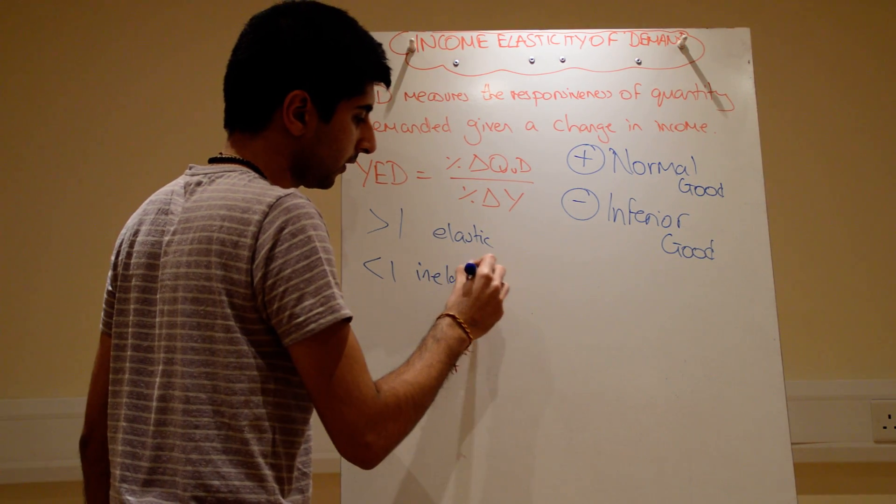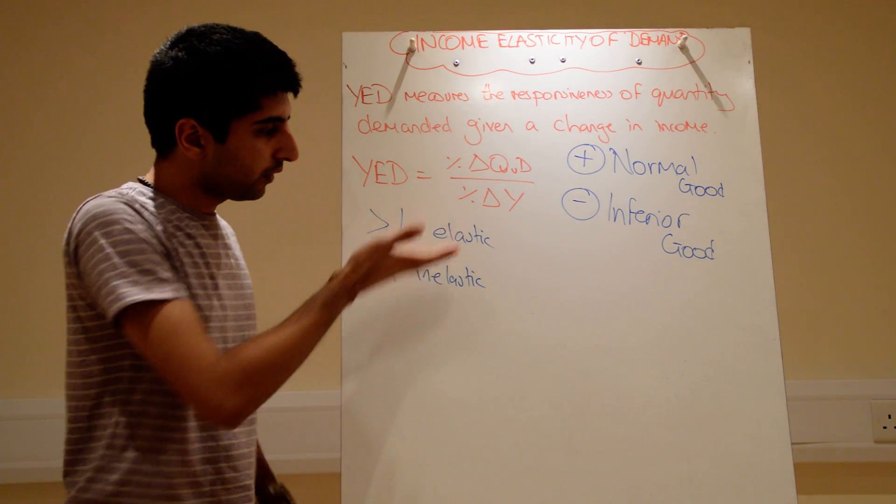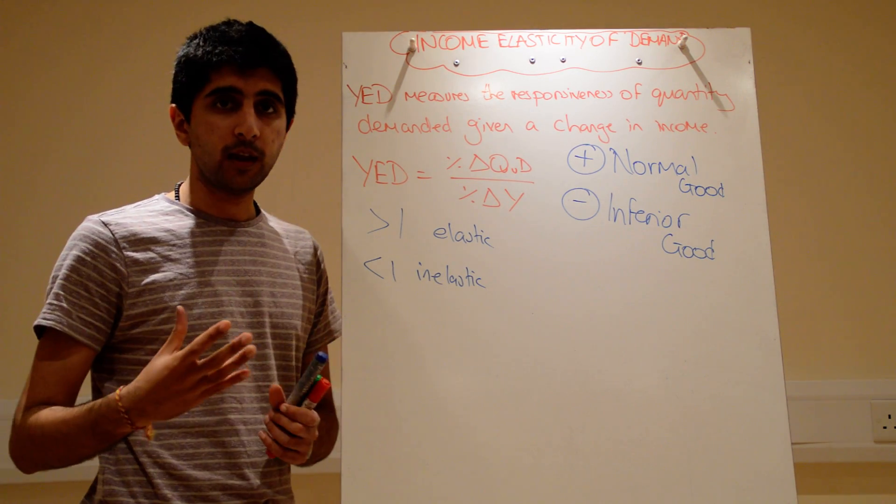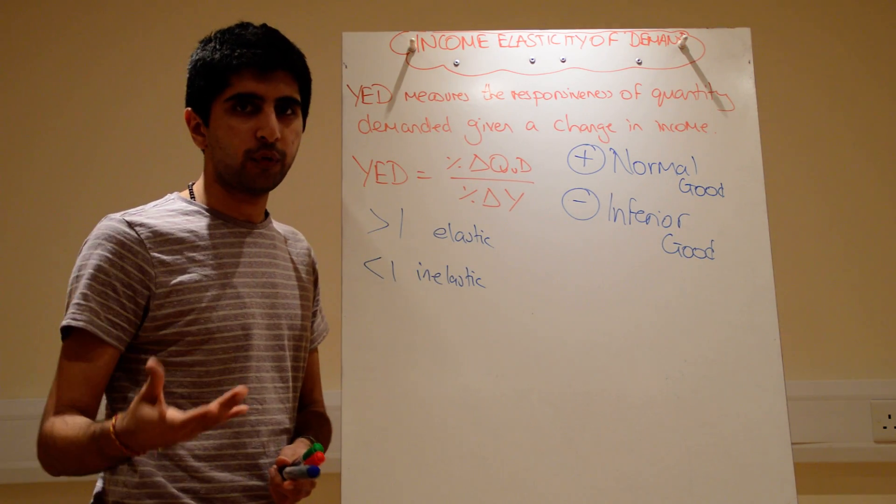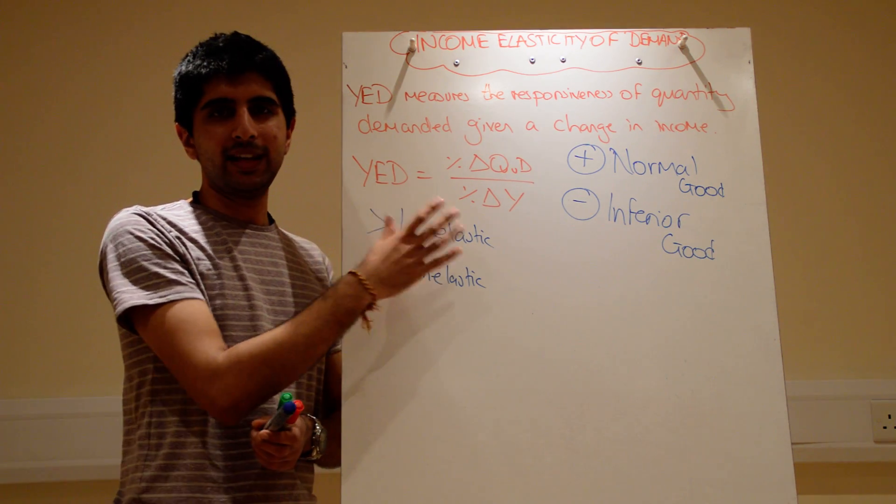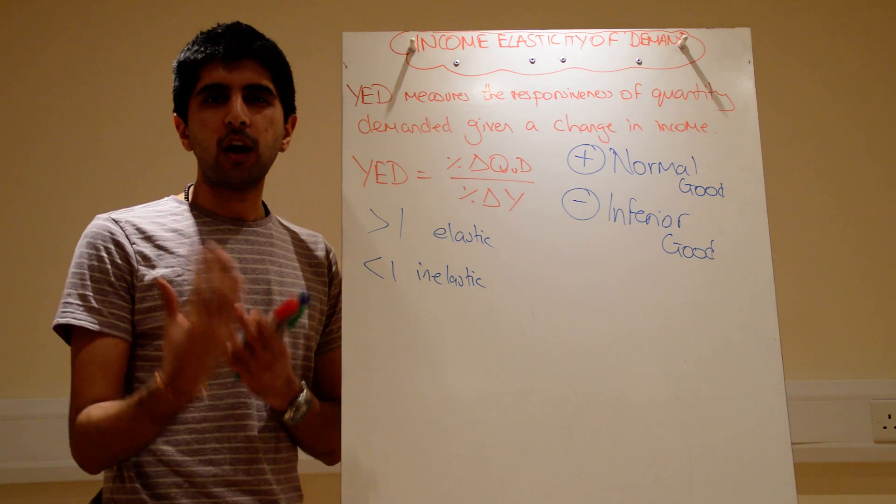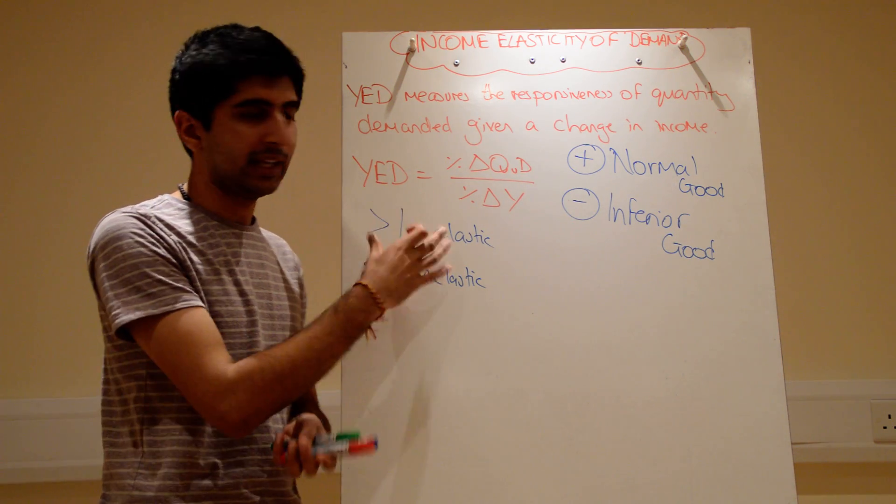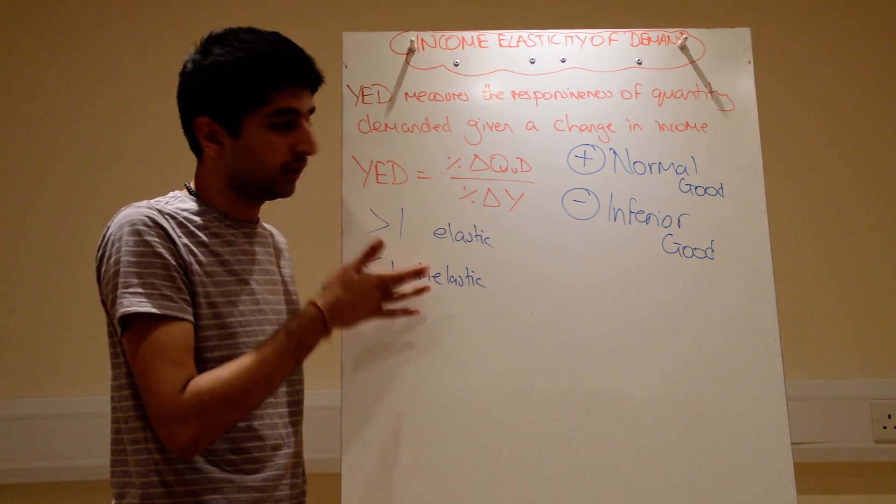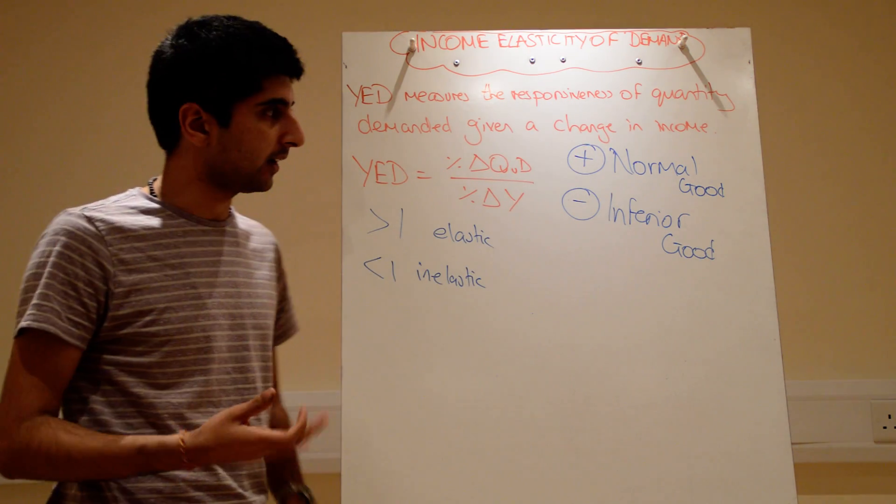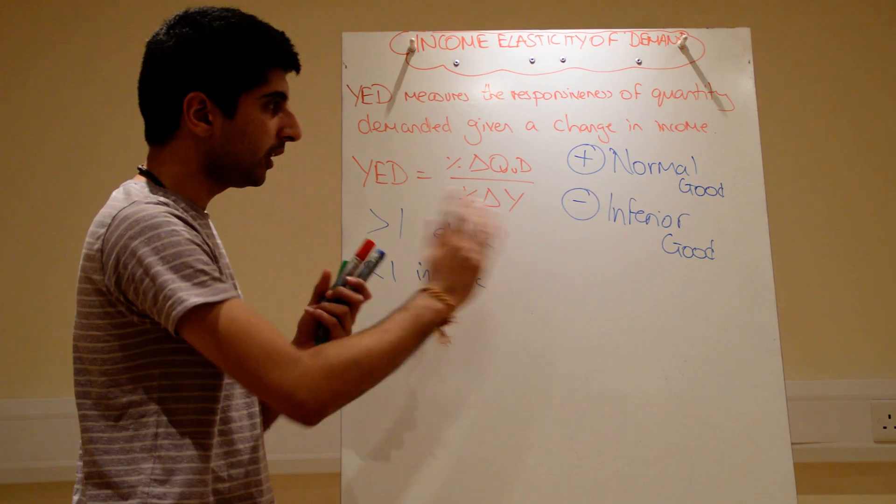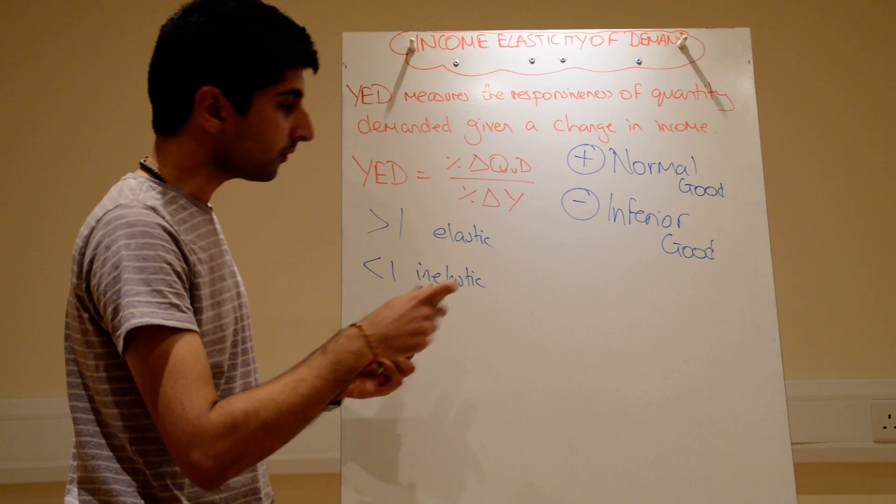Now, in truth, yes you can use elastic and inelastic to talk about responsiveness. But with YED, we can go a step further. For inferior goods, you can maybe classify them as elastic and inelastic. In truth, it's very hard to define whether inferior goods will be elastic or inelastic. So when we've worked out normal or inferior, ignore the signs and then use these to work out elastic and inelastic. Inferior goods, whatever. That's fine. But for normal goods, we can go one step further.